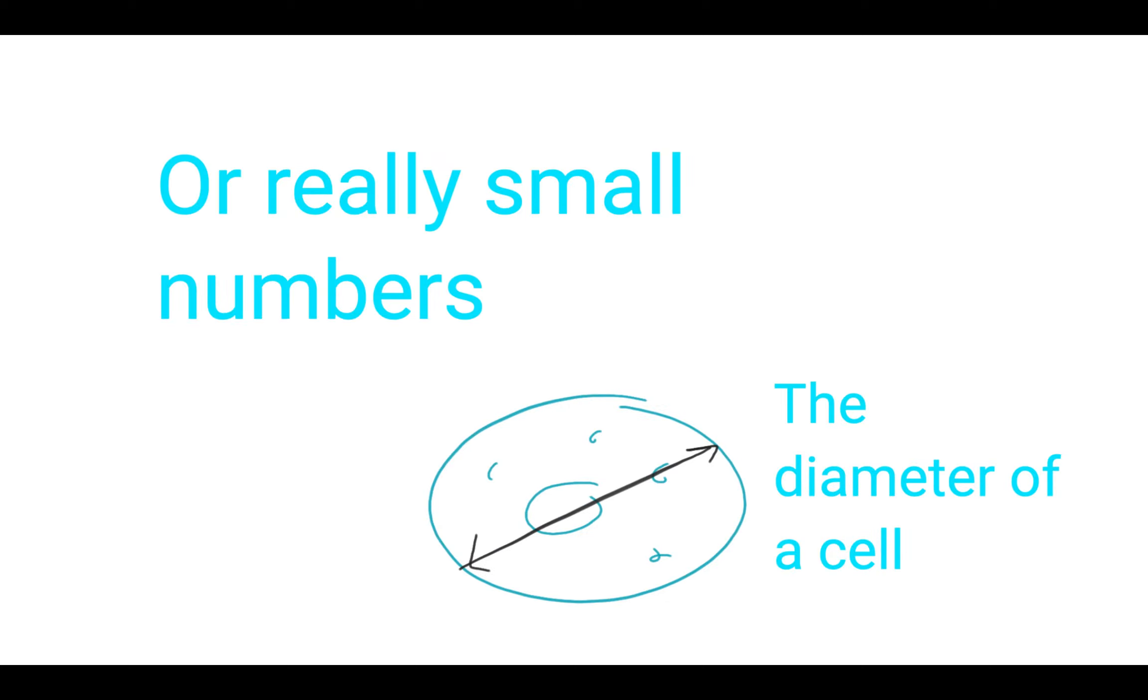And so we need some way to abbreviate that so that they can be transferred and discussed without making an error. Or you can have really small numbers, like I was just thinking of the diameter of a cell or a very split second or the size of a sediment particle.